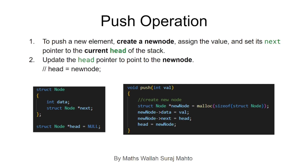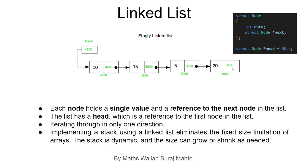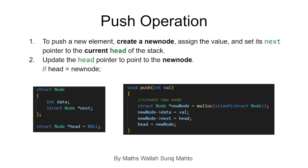The new node's next pointer is pointed to the head node. After creating the first node, the head is null, so the new node's next points to null. After that, we update the head to point to our new node, making it the topmost node. For example, push 20 creates a new node pointed to the null node, then that new node becomes our topmost node.